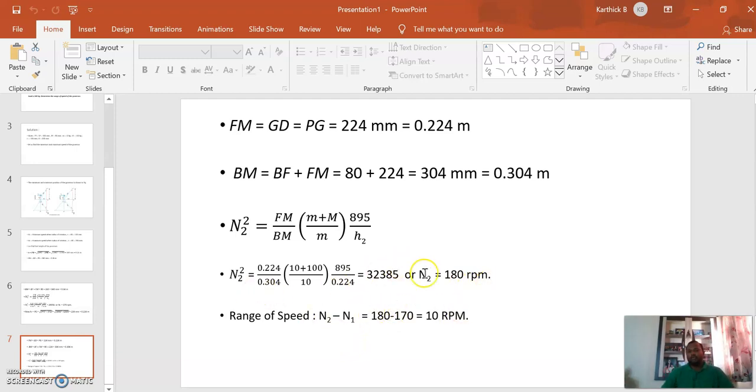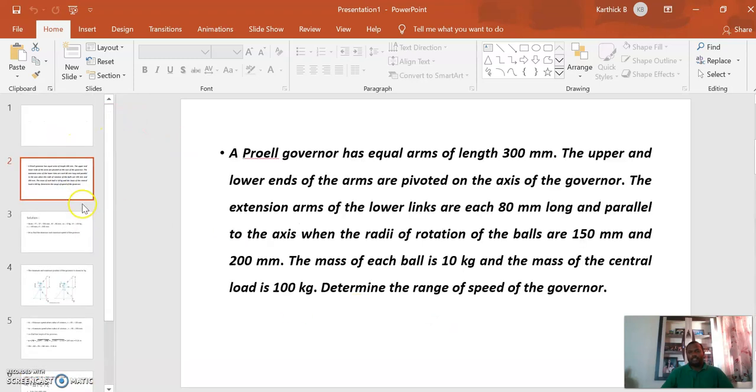By finding the difference between N2 and N1, which we found previously, 180 minus 170 equals 10 rpm. We find the range of speed of the governor with these parameters is 10 rpm. Thank you.